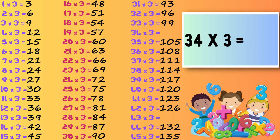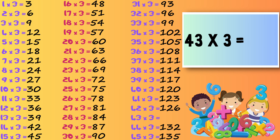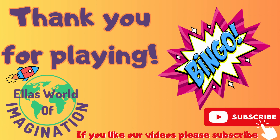Thirty-four times three — one hundred and two. And last but not least, forty-three times three — one hundred and twenty-nine. And that is the end of today's game everybody.